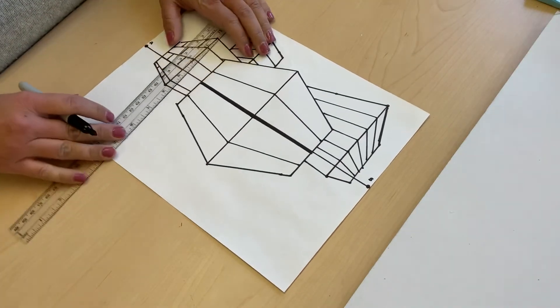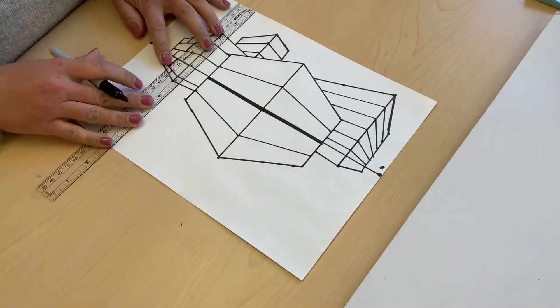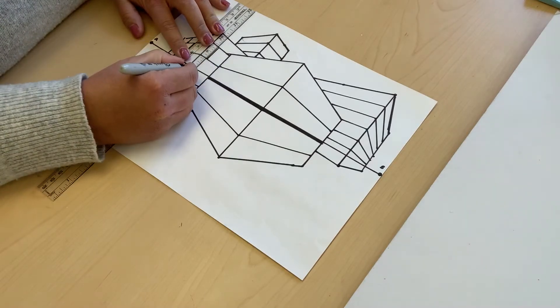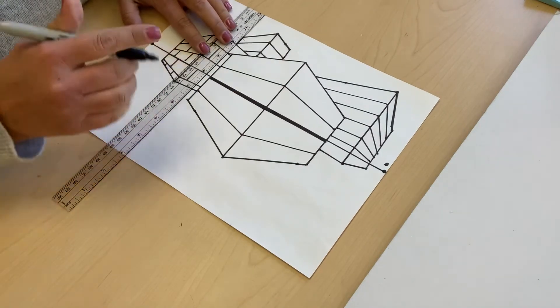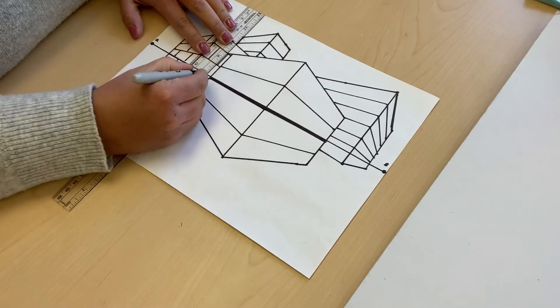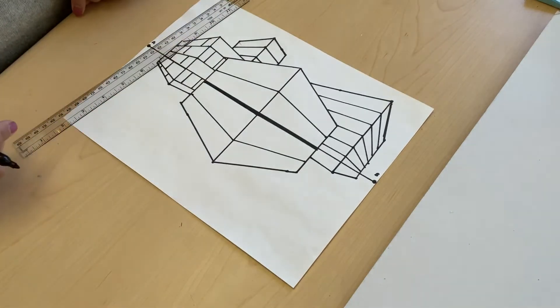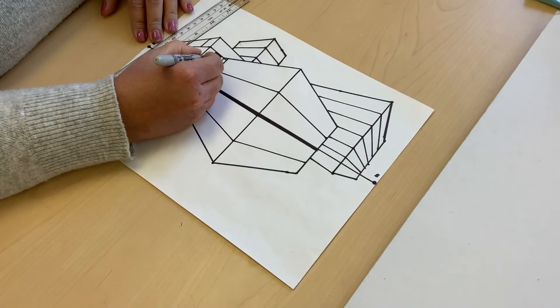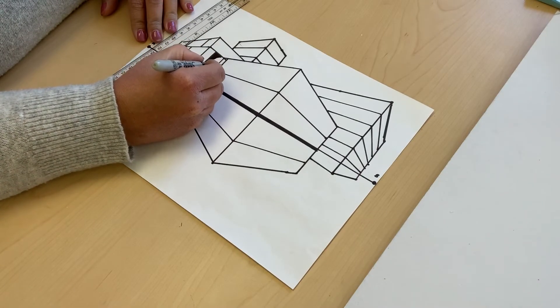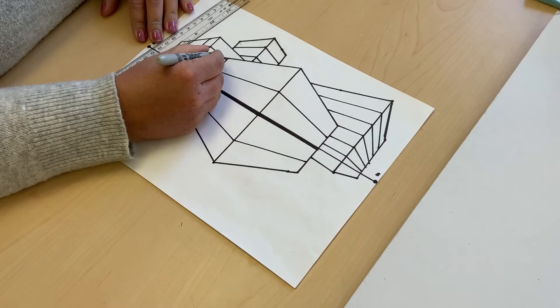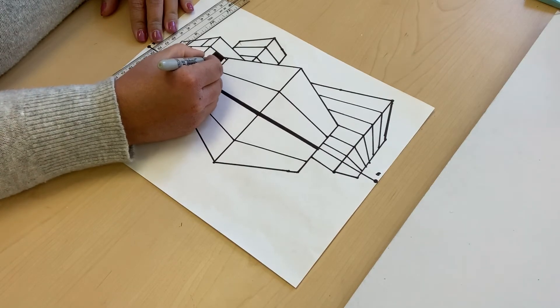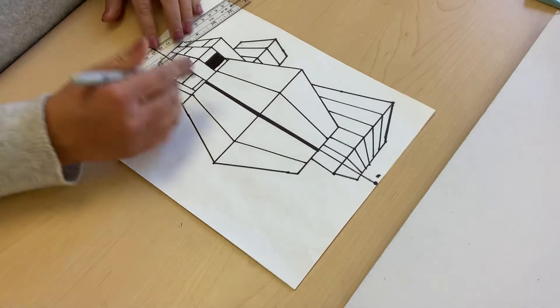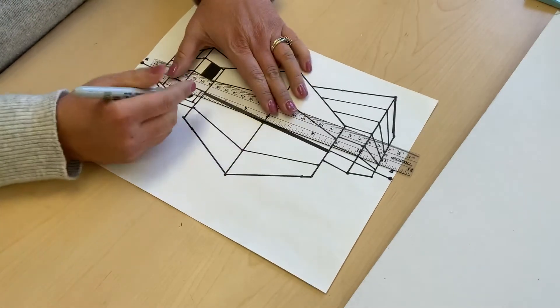If I were to do windows, again I'm gonna hold my ruler vertically and connect two lines. Now I have windows. I could either later use a black Sharpie or pencil, depending on which route you go. You could black out your windows or add more details to your windows like window panes.